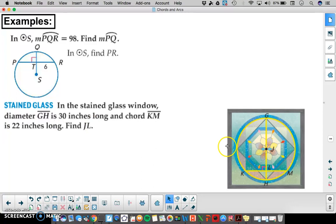Lastly, we have this picture of a stained glass window. Diameter GH is 30 inches long and chord KM is 22 inches long. Your task is to find the length of J to L.